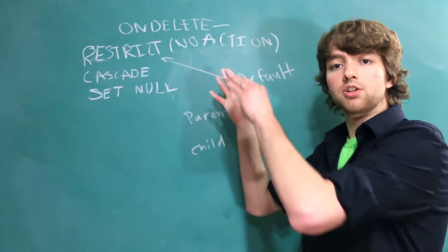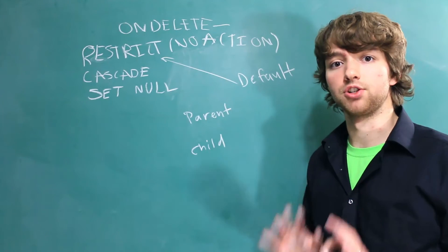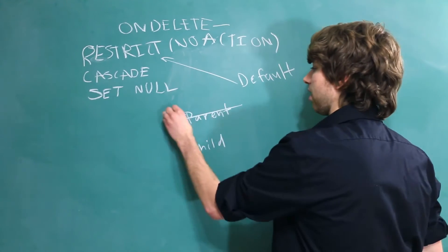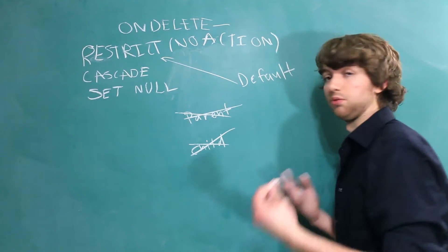Cascade, on the other hand, will actually send the same command down to the child and delete the child. So if we delete this parent row, the child row will be deleted as well.